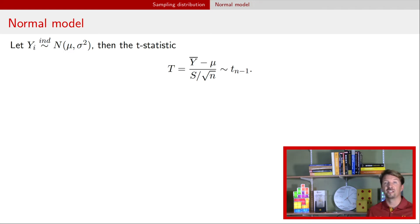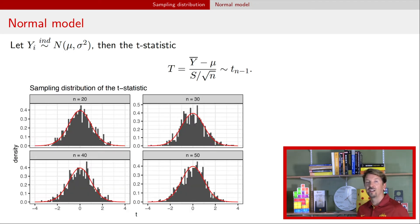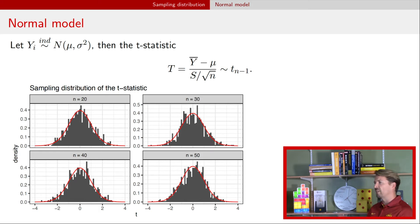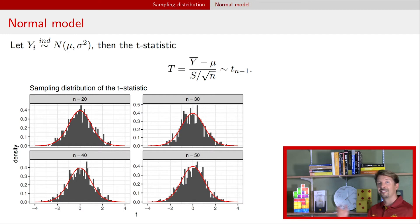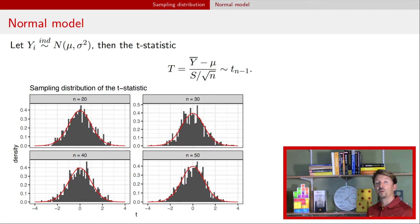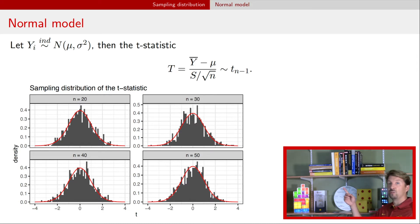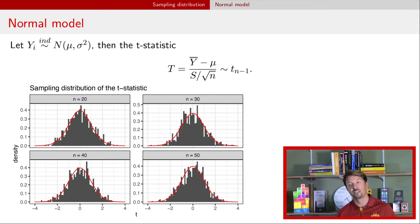We can do the same process as on the previous slide — a thousand realizations — and now we've calculated this statistic and overlaid on top of these histograms the t-distribution with the appropriate degrees of freedom, n minus 1. We can see that, although there is variability in the histogram, those samples generally follow the shape of the t-distribution with n minus 1 degrees of freedom.